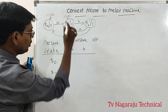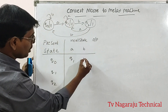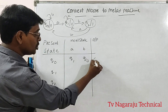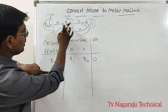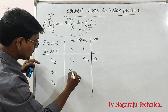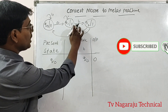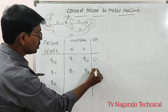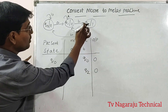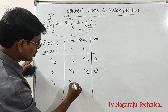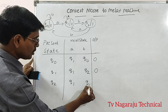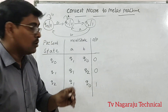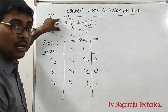I have a total of three states: Q0, Q1, and Q2. On input A, Q0 moves to state Q1. Q1 on input A moves to the same state Q1. Q1 on input B moves to Q2. The output of Q1 is zero. Q2 on input A moves to Q1, Q2 on input B moves to Q0, and the output of Q2 is one. This is the transition diagram for the Moore machine.